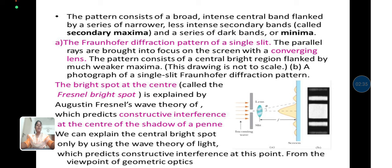The bright spot at the center is explained by Augustin Fresnel's wave theory, which predicts constructive interference at the center of the shadow. We can explain the central bright spot only by using the wave theory of light, which predicts constructive interference from the viewpoint of geometric optics.